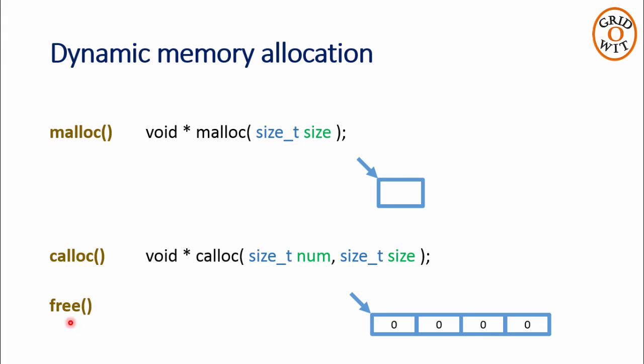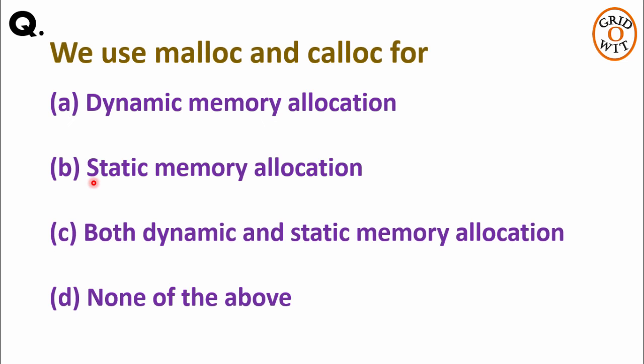All these functions are available in the stdlib.h header file. Now let us get back to our question. So the correct answer is option A, that is, we use malloc and calloc for dynamic memory allocation.